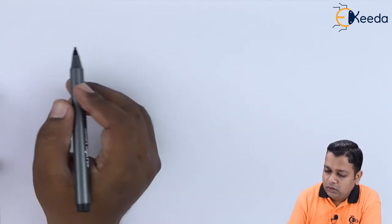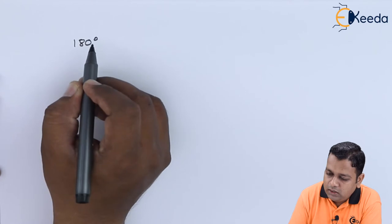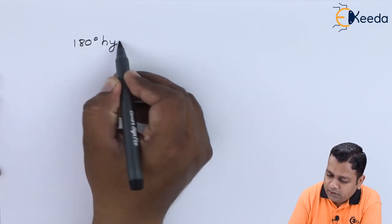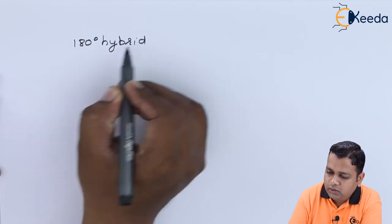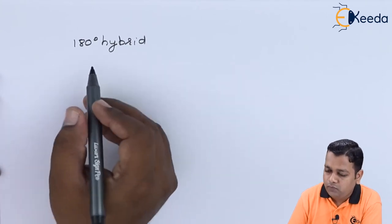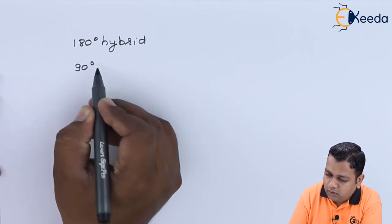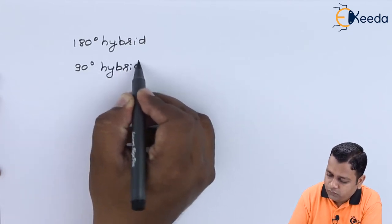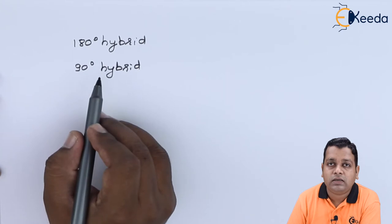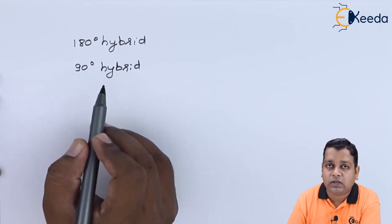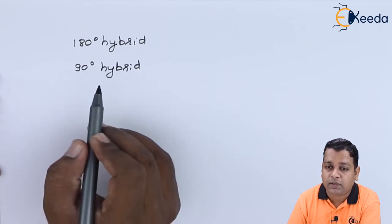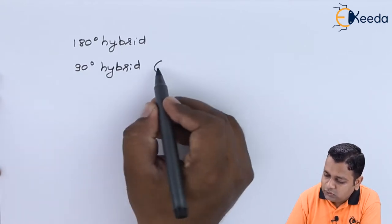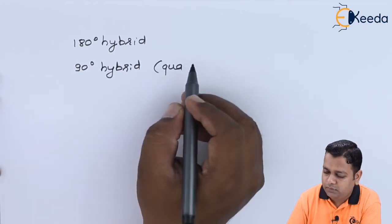There are two types of hybrid couplers. The first type is called the 180-degree hybrid coupler, whereas the other type is the 90-degree hybrid. Since 90 degrees is one-fourth of 360 degrees — a complete phase cycle — this is also referred to as a quadrature hybrid coupler.